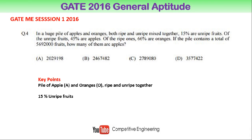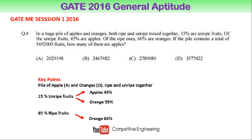15% are unripe fruits, and of that 15%, apples are 45%, so the remaining 55% are oranges. 85% are ripe fruits, because total is 100% and 15% are unripe. Of the ripe fruits, oranges are 66%, so apples are 34%, because the total percentage is 100%.